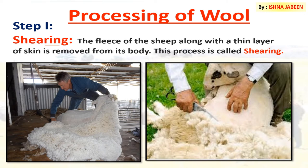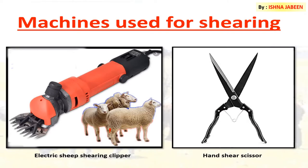As you can see in the picture, the fleece of the sheep is removed. Machines used for shearing include electric sheep shearing clippers and hand shear scissors, which are used to remove the fleece of the sheep.